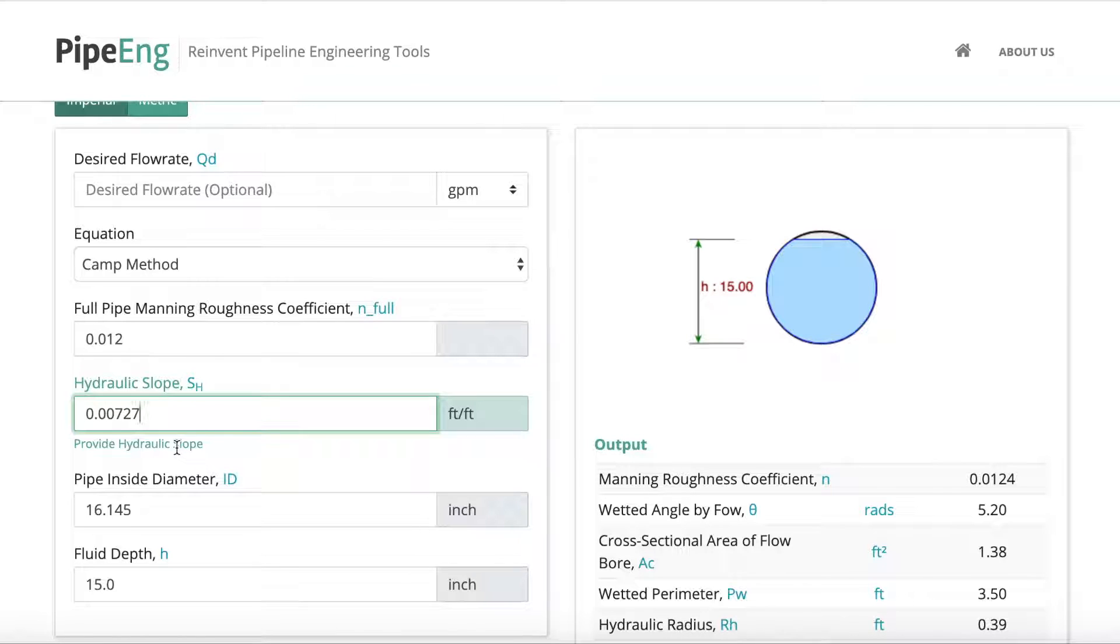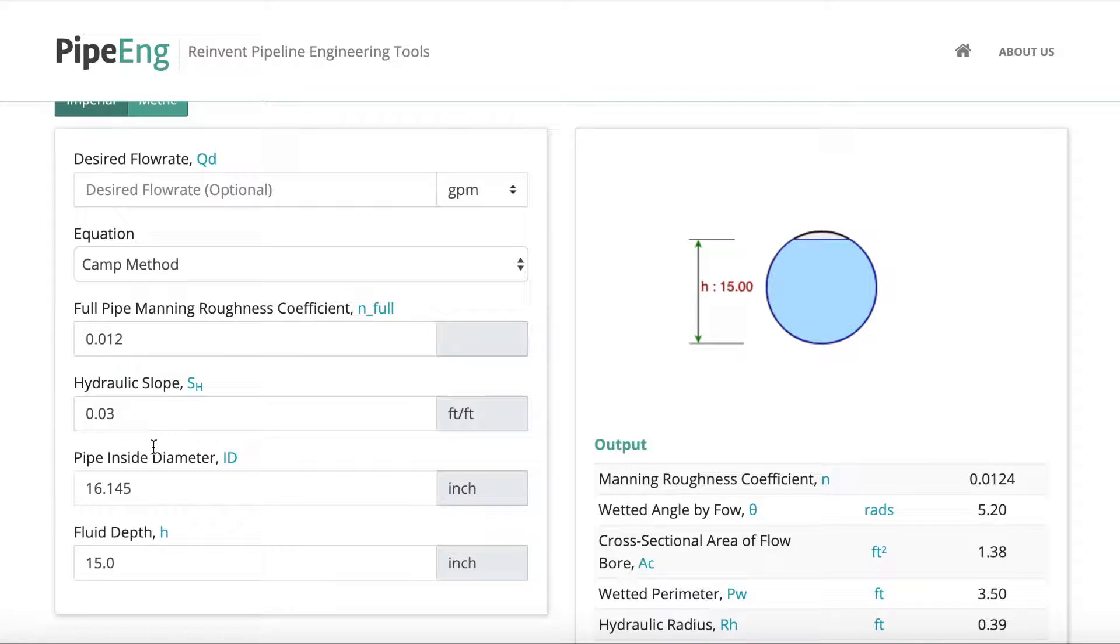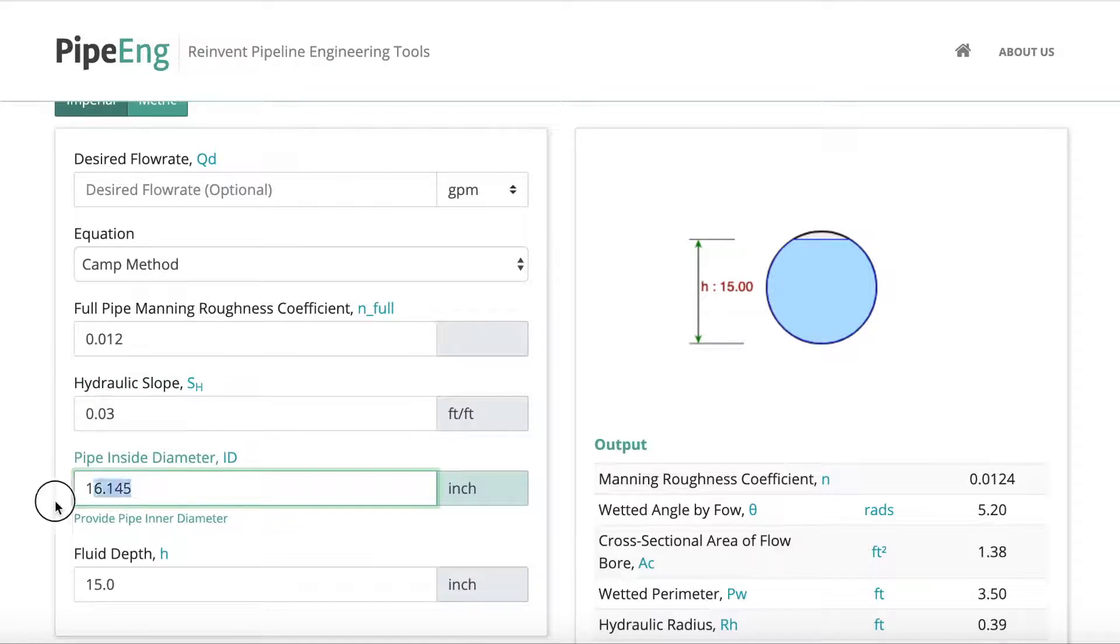And hydraulic slope, we can assume the bottom of the pipe, the slope is let's say three percent. So let's put 0.03 as the slope. And the pipe inside diameter, let's say this pipeline is about 24 inches. So internal diameter, let's say roughly 23 inches.